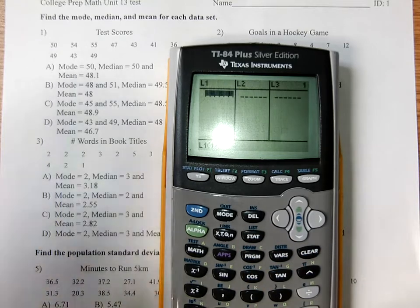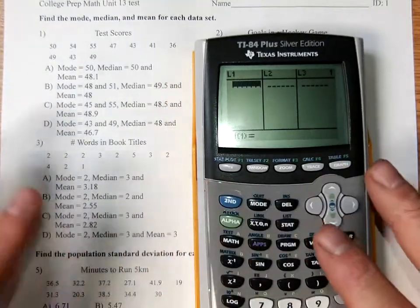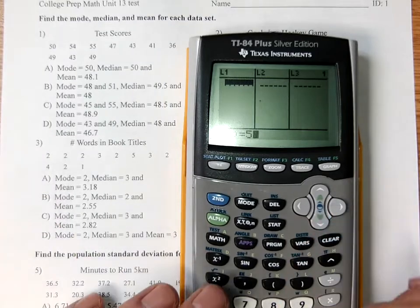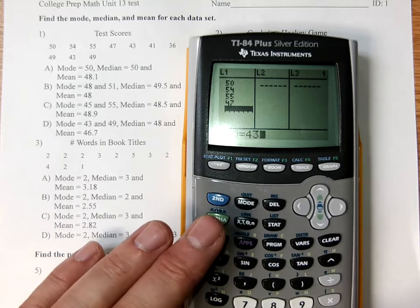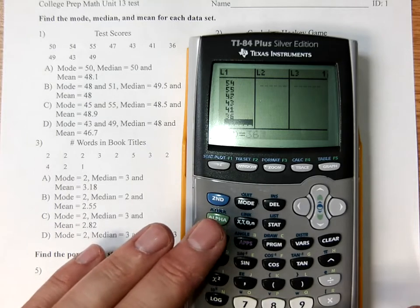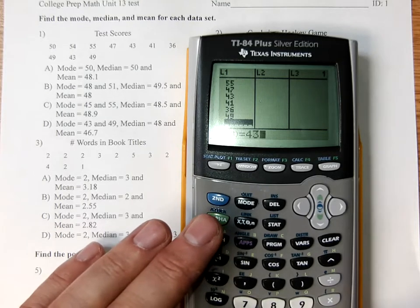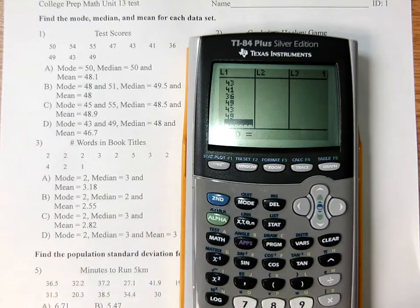So go stat, edit. We type in the numbers. They're going to be smaller sets, not super large. 50, 54, 55, 47, 43, 41, 36, 49, 43, 49.